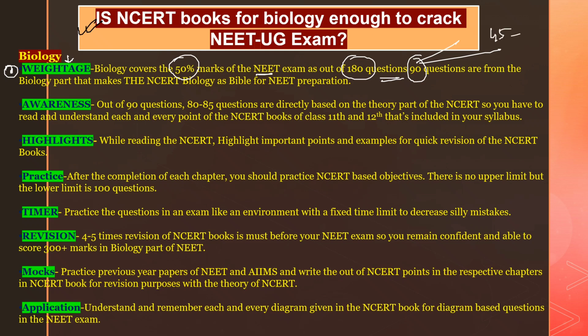For biology, the weightage covers 50% of marks in the NEET exam. Out of 180 questions, 90 questions come from biology — 45 from zoology and 45 from botany. NCERT books give you full awareness of your examination. When there is a reduced syllabus, teachers will point out the relevant topics in NCERT, so you read less but build a strong concept on those required topics.